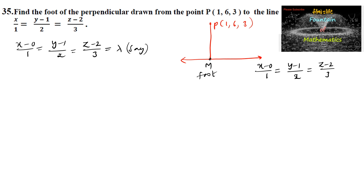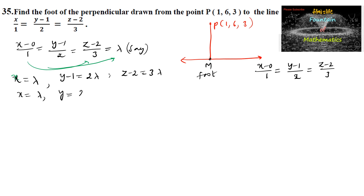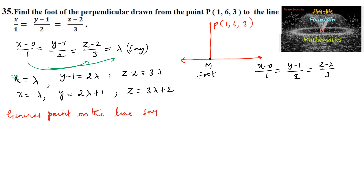So that we can simplify: x = λ, y − 1 = 2λ, z − 2 = 3λ. That is, x = λ, y = 2λ + 1, and z = 3λ + 2. So the general point on the line, say M, is (λ, 2λ+1, 3λ+2).